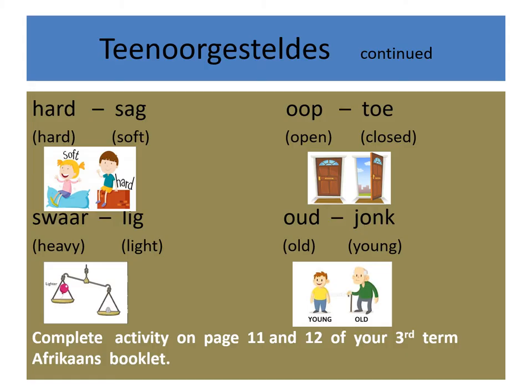Hart and sach — hard and soft. Oorp and toe — open and closed. Zwaar and luch — heavy and light. Oud and jong — old and young.